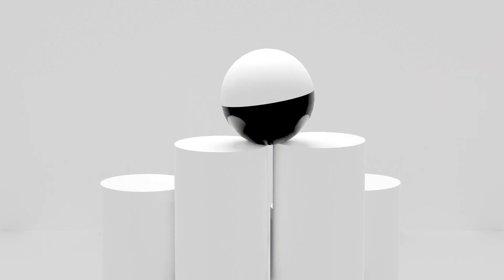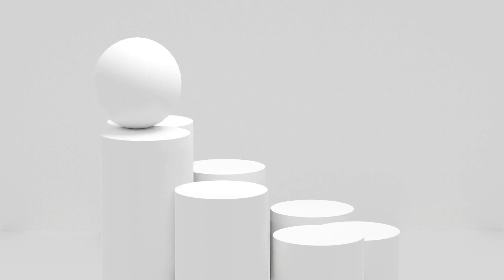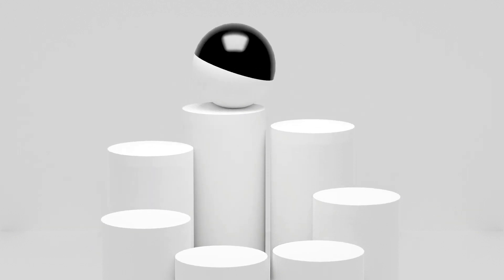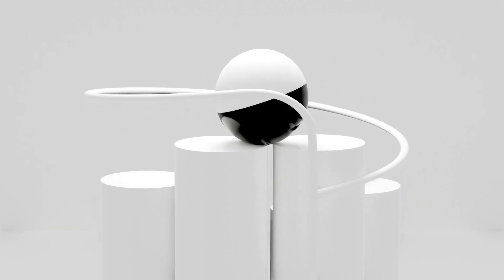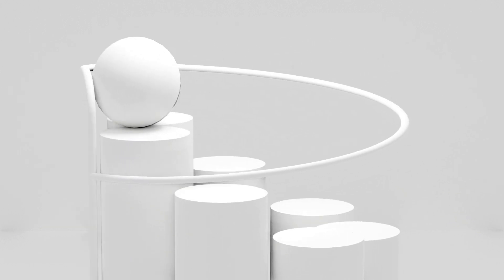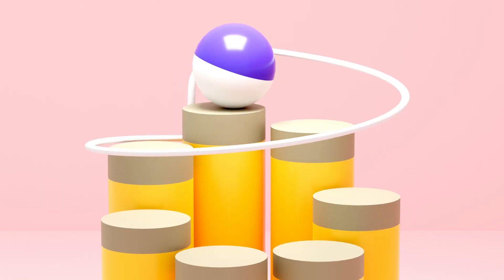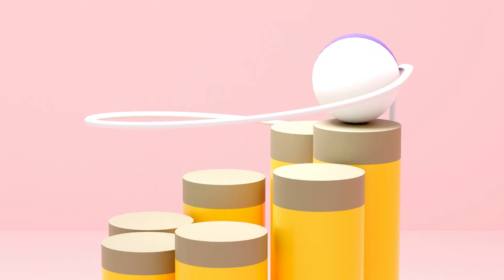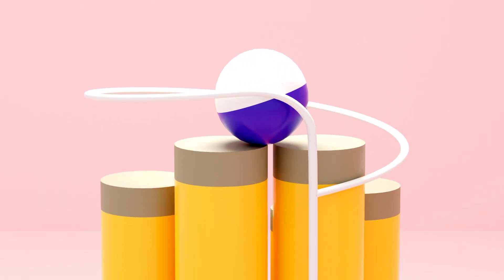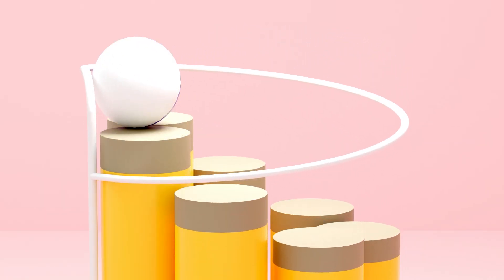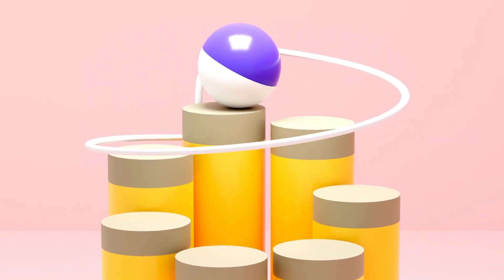First, we are going to create the cylinders and animate them using geometry nodes. Then we are going to add the ball and make it rolling on the cylinders. Next, we are going to add the decorative object, lighting, and material to finish the scene. So without further ado, let's get started.